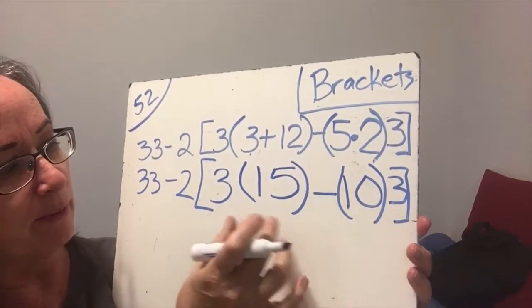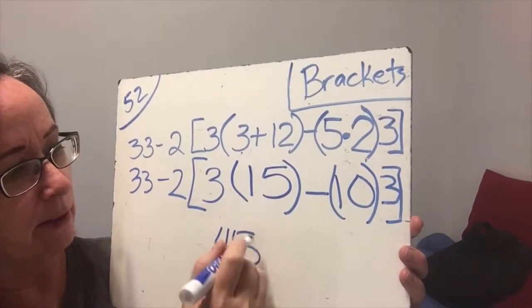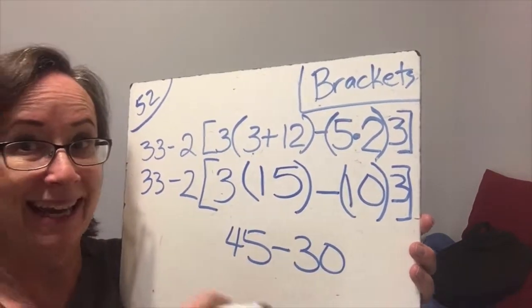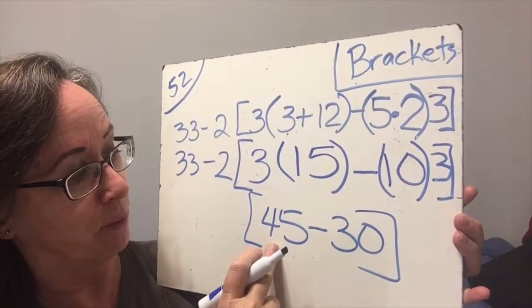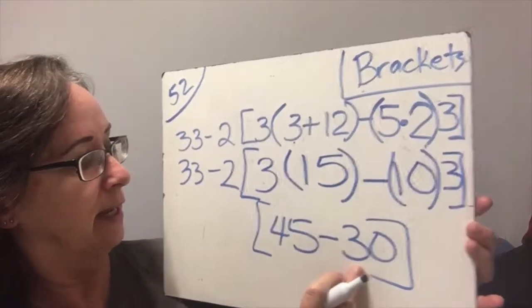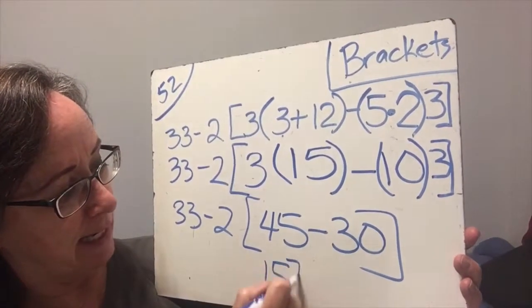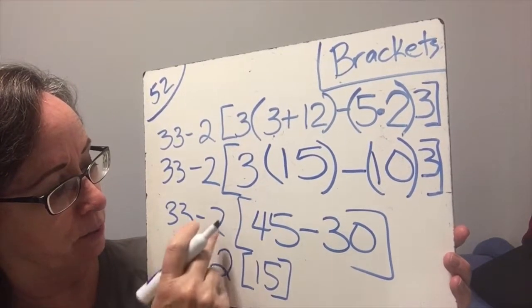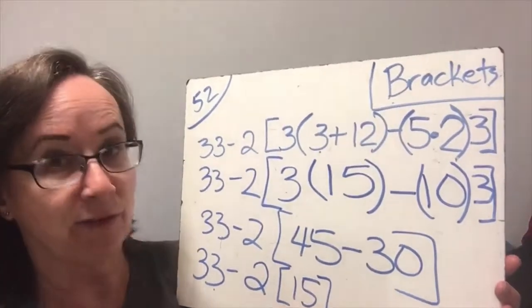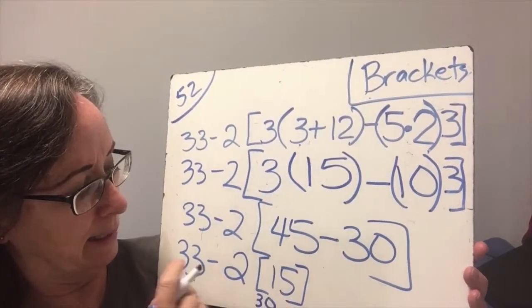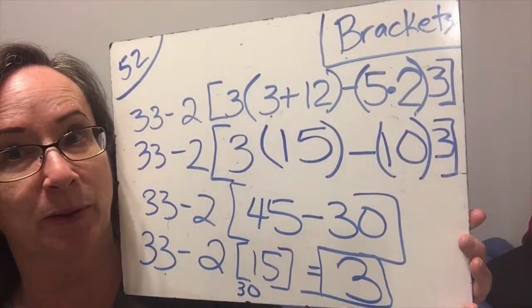So now we're still simplifying in here. We have a multiplication minus another multiplication. So 3 times 15 is 45 minus 10 times 3 is 30 because multiplication is a higher rank than our addition and subtraction. So now we have this and 45 minus 30 is 15. So now I'll bring this down. We have 33 minus 2 times 15. And 2 times 15 is 30. So we have 33 minus the 30 is the 3. And that is the answer to example number 2.